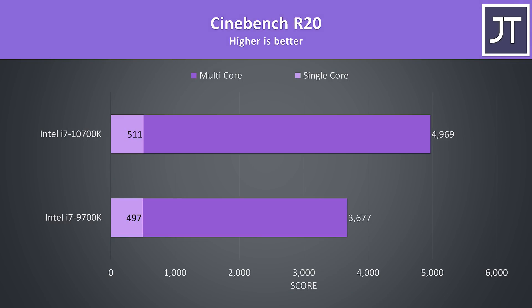Starting with Cinebench R20, I've got the newer 10700K up top and the older 9700K below. In this test the 10th gen chip was just 3% faster in single core performance, however the multicore score received a 35% increase, mostly as a result of hyperthreading.